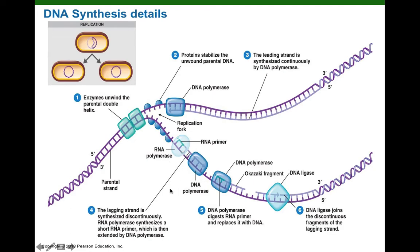So let's see what's happening. Initially at the replication fork on this opposite template strand, the primase would bind, synthesize a short RNA primer, and then DNA polymerase 3 would take over, synthesizing DNA.